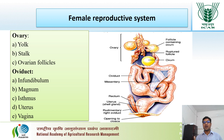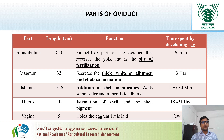The ovary comprises of yolk, stalk, and the ovarian follicle. Whereas the oviduct has different parts like infundibulum, magnum, isthmus, uterus, and the vagina.